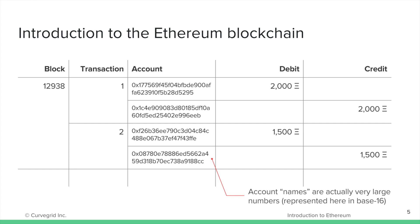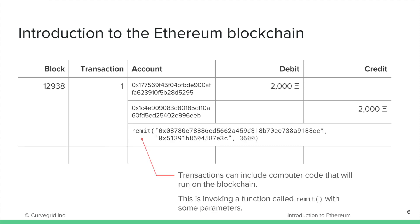This whole system is necessary because there is no central authority issuing Ethereum account addresses or private keys. Transactions can include instructions to invoke computer code that runs on the Ethereum blockchain. In this case, a function called remit is being called to run by Alice as part of the transaction. The ability to upload and run arbitrary computer code on the Ethereum blockchain is one of the key differentiators versus earlier blockchain implementations, such as Bitcoin.